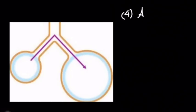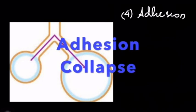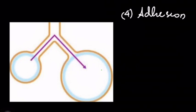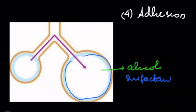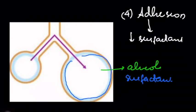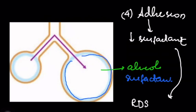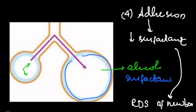The fourth variety is adhesive collapse. This is illustrated with an alveolus coated on the inside by surfactant. This type of collapse is due to decrease in surfactant. We are familiar with this entity in the pediatric population — it is known as respiratory distress syndrome of the newborn, which is basically due to decrease in surfactant. The surfactant is needed for proper expansion of the alveoli and prevents them from collapsing. Deficiency in surfactant causes the alveoli to collapse.